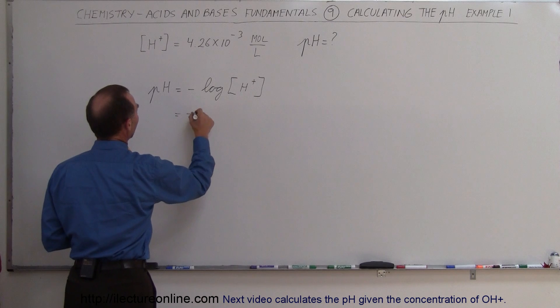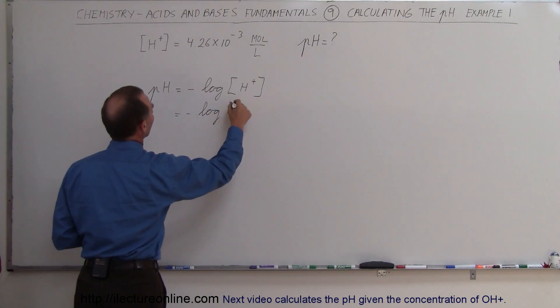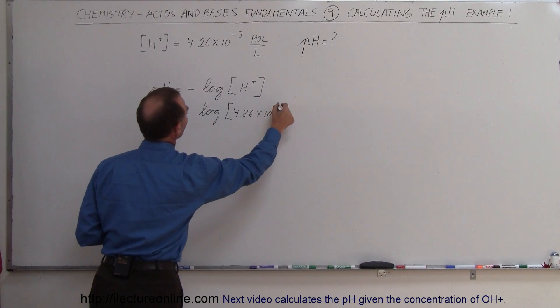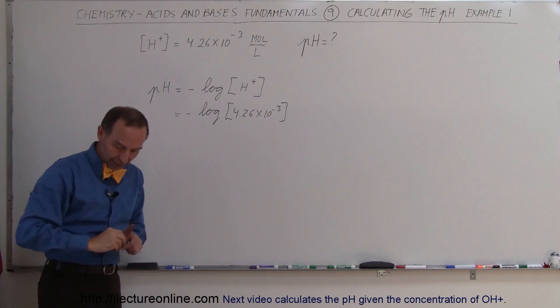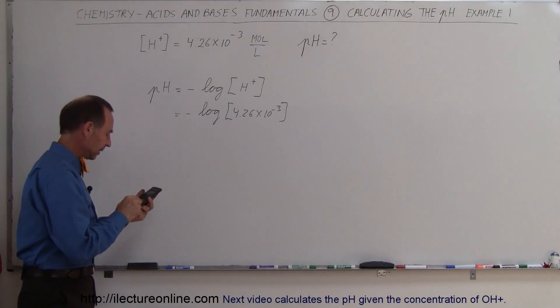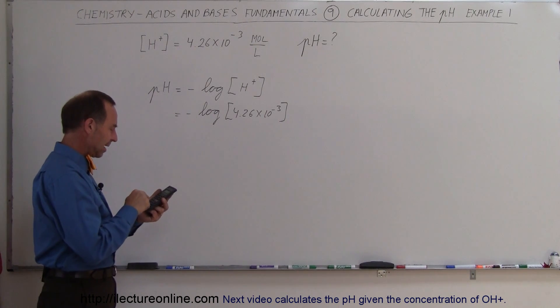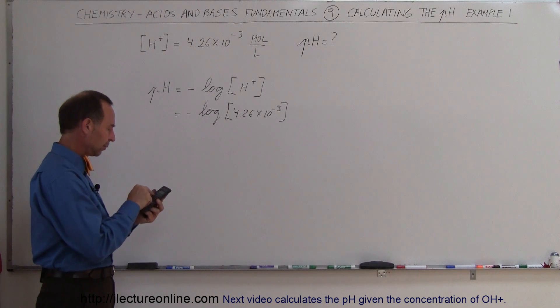So this is negative log of 4.26 times 10 to the minus 3. We need a calculator for this. We enter 4.26 E negative 3, then take the log of that.